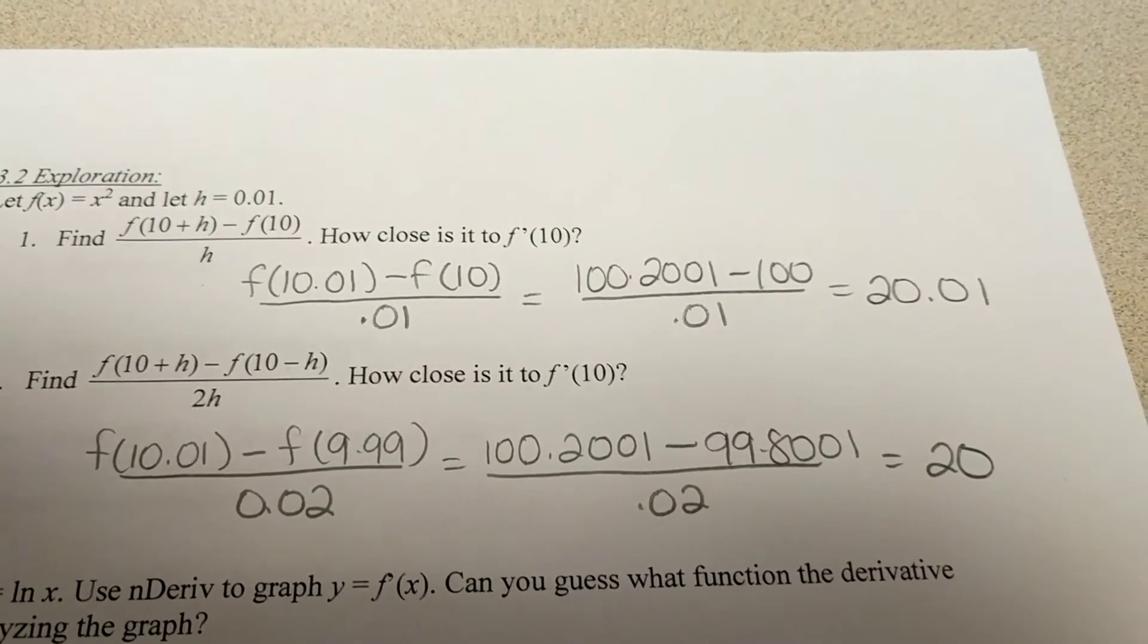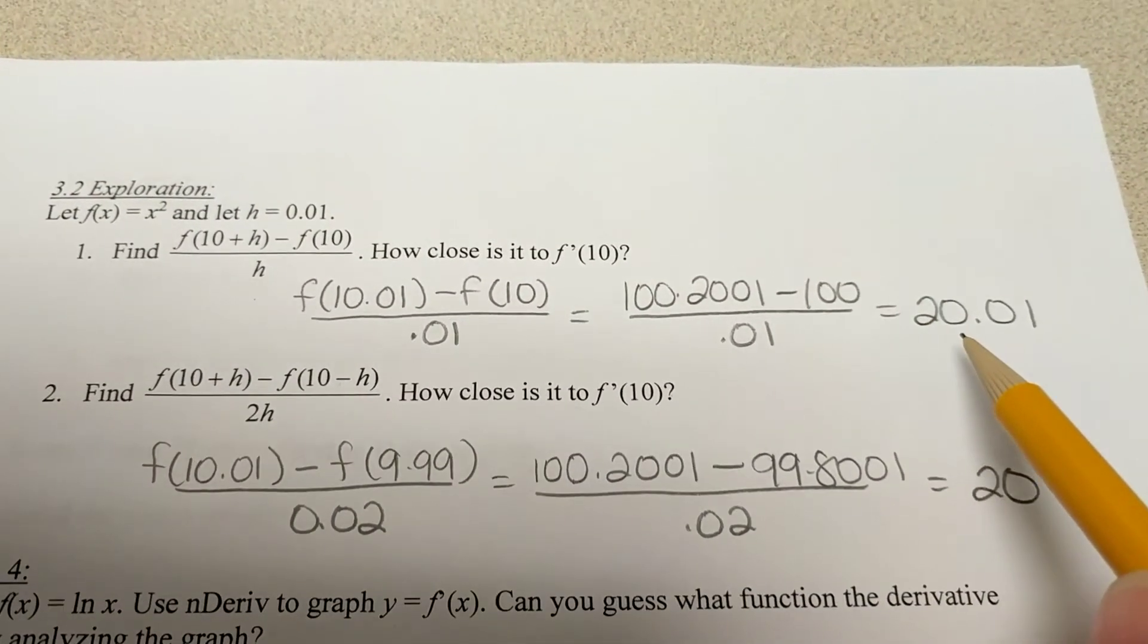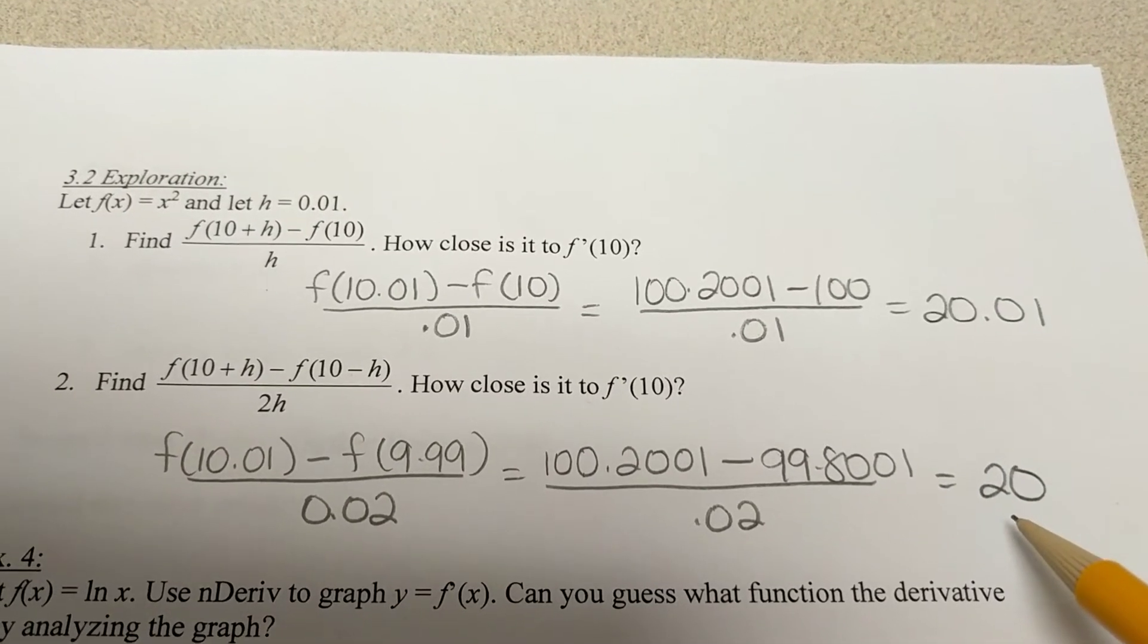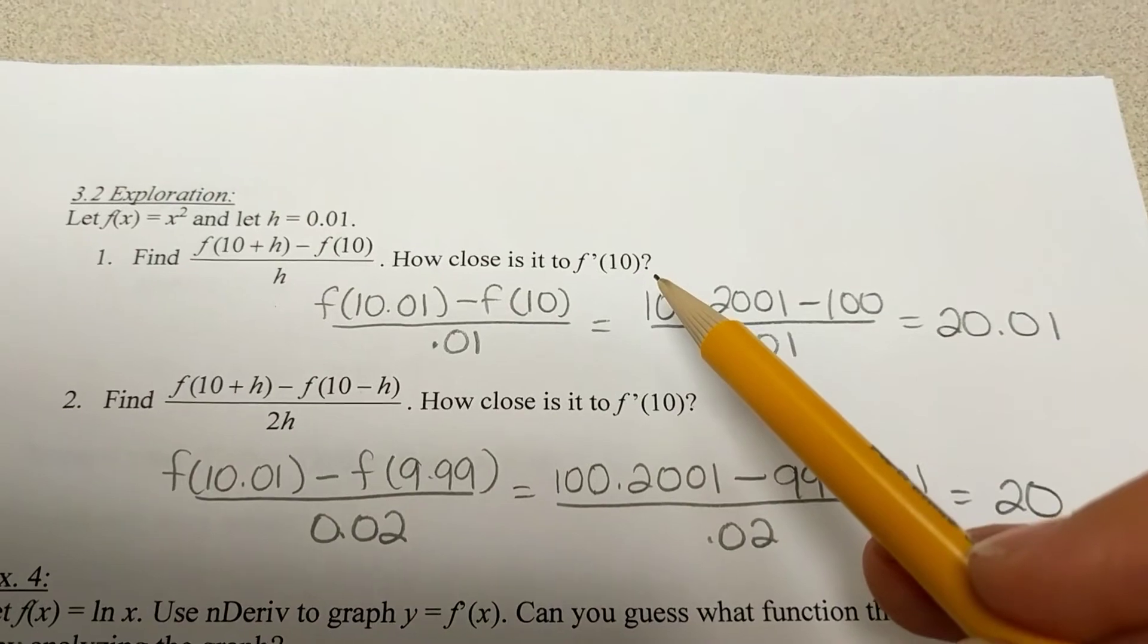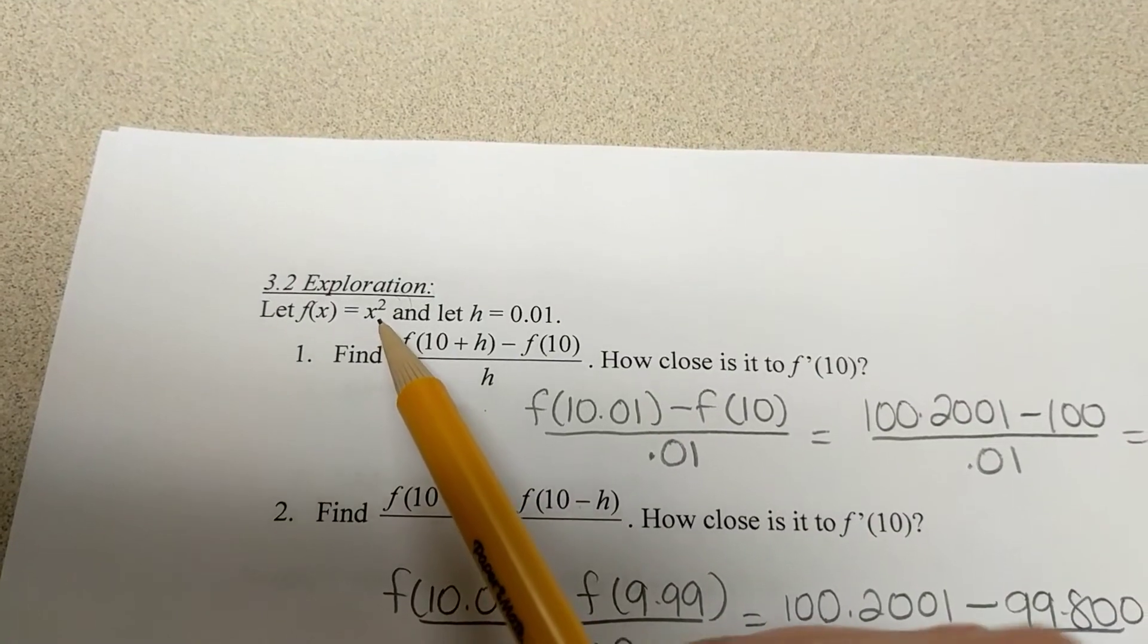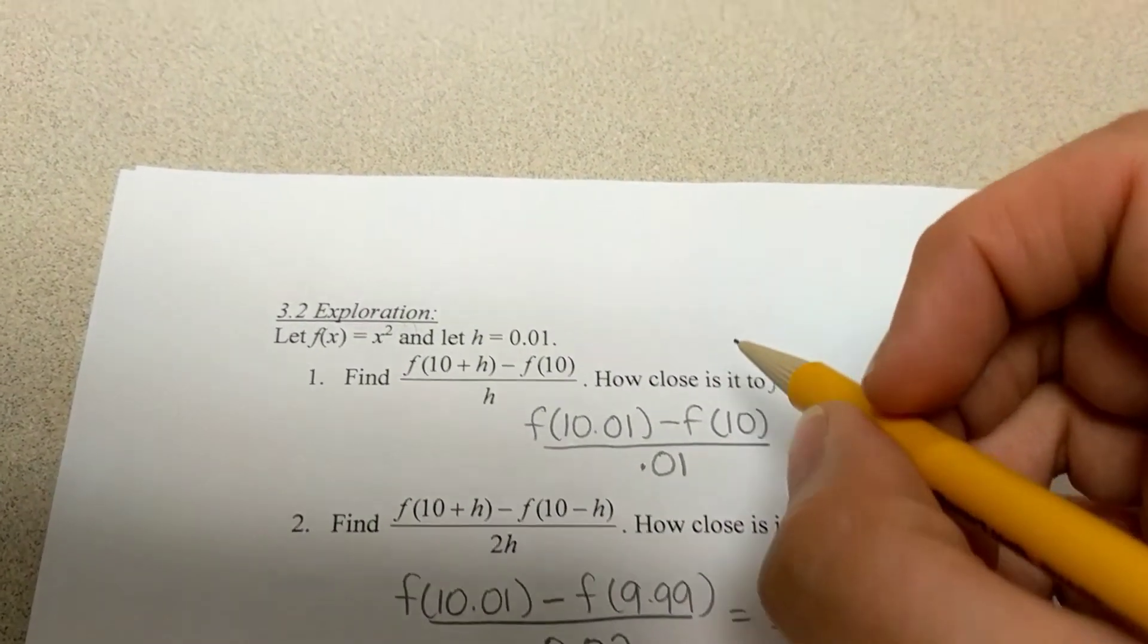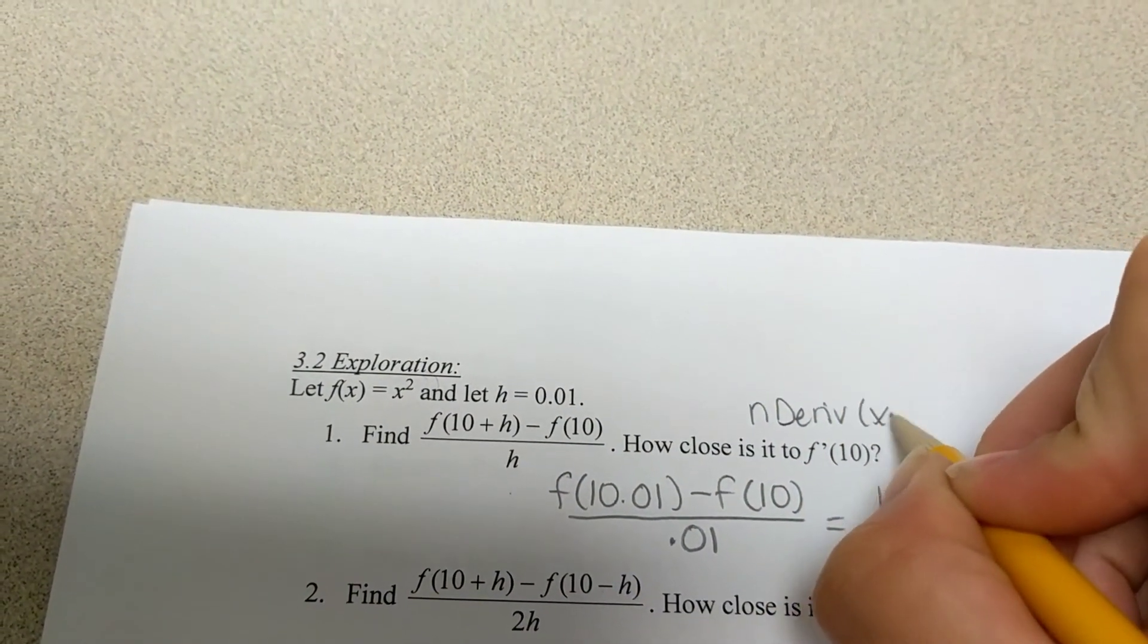All right. And using math magic, there is the work to figuring these out. This one came close. We got 20.01. This one gave us a slope of 20. And they both asked, well, how close is it to f prime of 10? Well, we've done the slope of this one before as well. So, if you do this actually on your calculator, at 10,